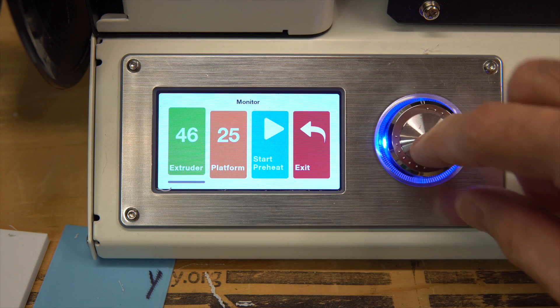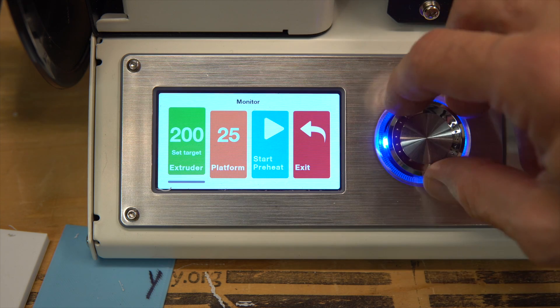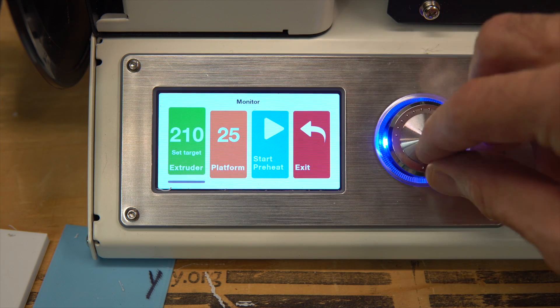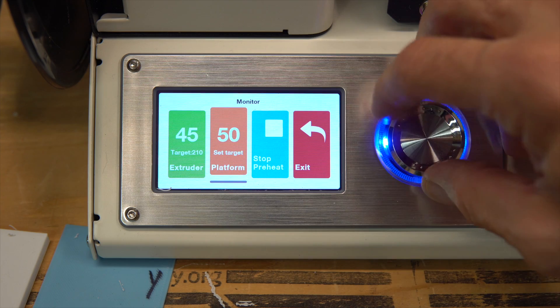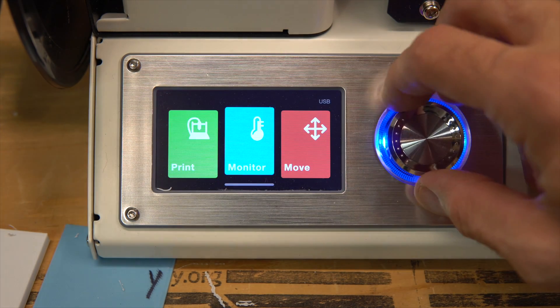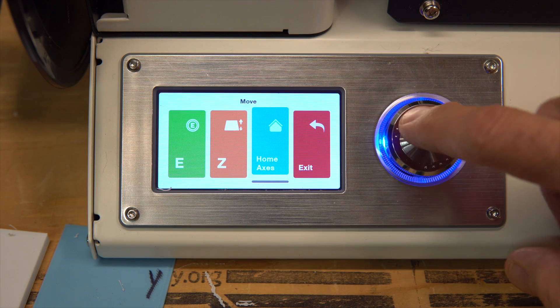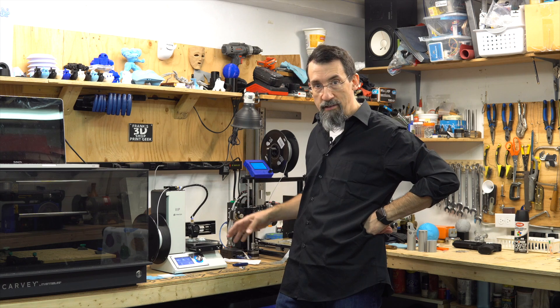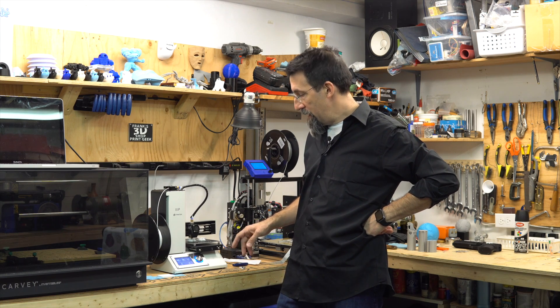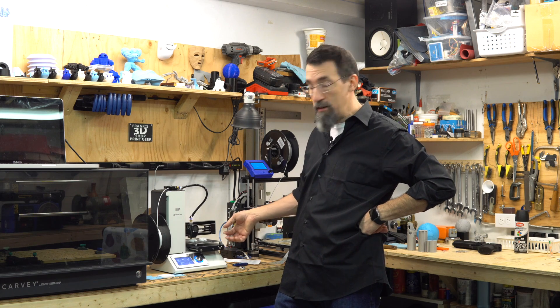Then I came out of the menu and went to the home axis menu and the move menu, and it did home its axis. That was fine. Then normally after that you can level the bed easily.